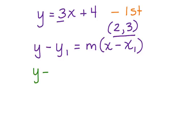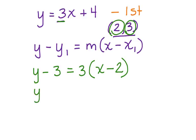y minus y1, y1 is 3, equals the slope, which is 3, times x minus x1, which is 2. Now, we're going to use the distributive property to get rid of the parentheses on the right side of the equation.